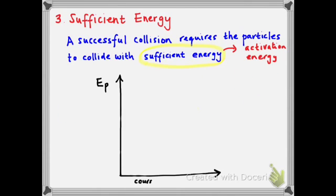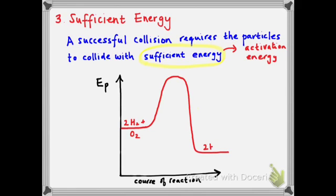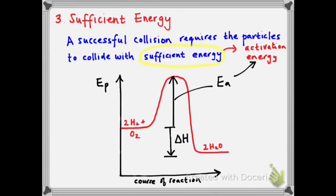If we consider a potential energy graph plotting the course of that reaction, we start off with the hydrogen and oxygen molecules at a particular energy. Then we have to put energy in to break the bonds, so the graph goes up. New bonds are then formed and energy is released, and we get our product — the two water molecules. The difference between where we start and where we finish in terms of energy is called the enthalpy change, or delta H. But what we're interested in now is the energy hill we have to get over — the difference between where we start and the top of the graph, where the activated complex would be formed. That refers to the activation energy: the energy we have to put in to break those bonds.